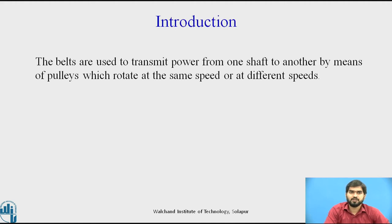Introduction. The belt are used to transmit the power from one shaft to another by means of pulley which rotates at the same speed or at different speed. If the two shafts are rotated with the same speed, we are going to prefer the diameter of the pulley to be the same. If we require a reduction in speed, we can choose different diameters for the two pulleys.